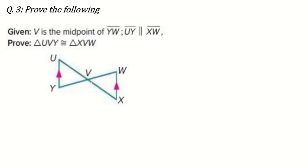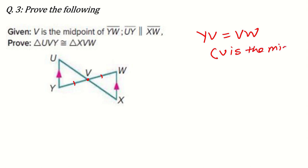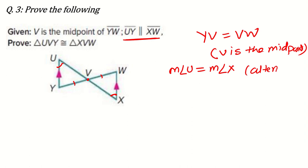Another question: V is the midpoint of YW. So YV is equal to VW — because V is the midpoint, by the midpoint theorem. Next, UY is parallel to XW. Since we have two parallel lines and one transversal, we can use the alternate angle condition. So measure of angle U will be equal to measure of angle X, because of alternate interior angles.